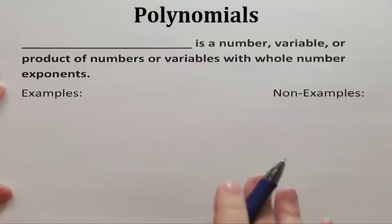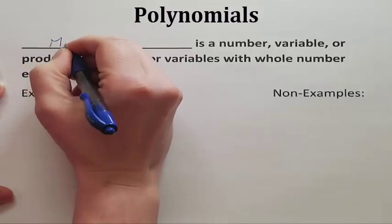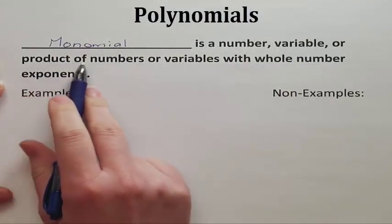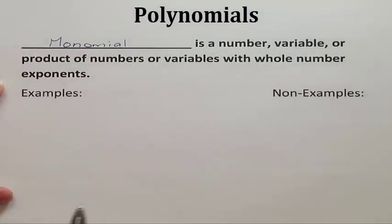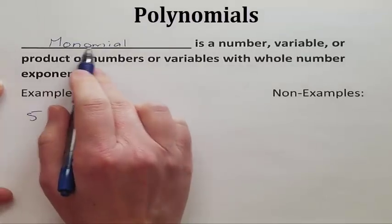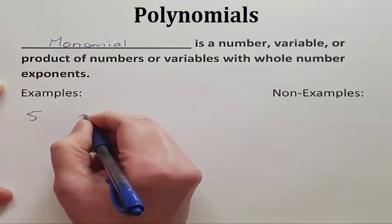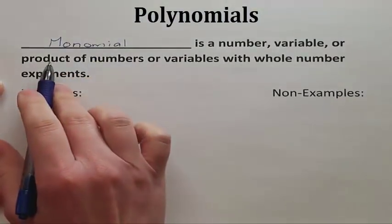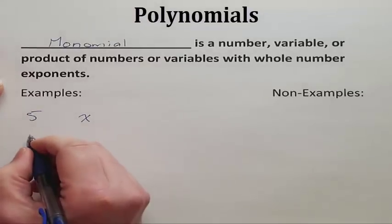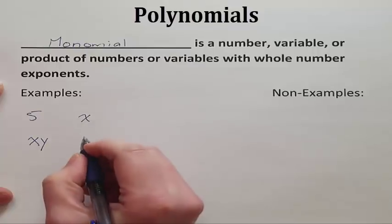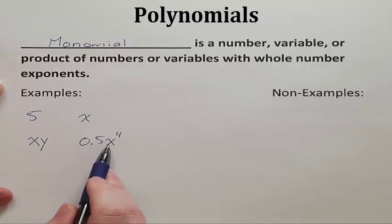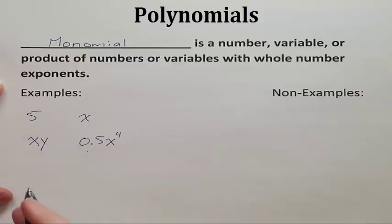Now we're looking at polynomials, and the first thing we need to discuss is a definition. The term is monomial. A monomial is a single number, a single variable, or a single product of numbers or variables with whole number exponents. Examples of monomials are: five, x, xy, and 0.5x to the fourth. These are all monomials — they're single parts.